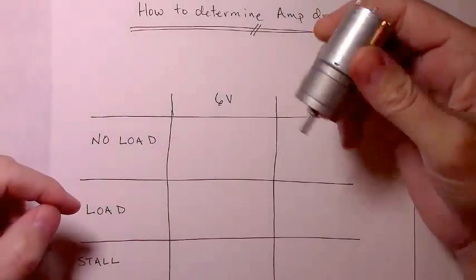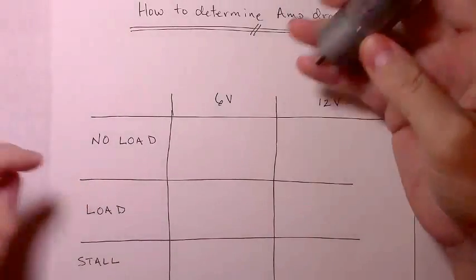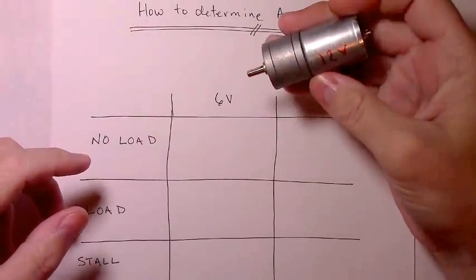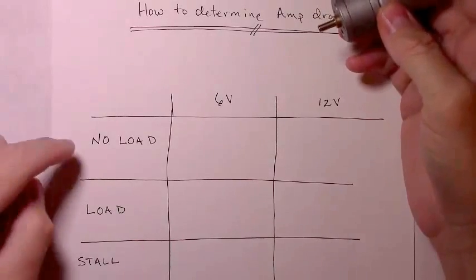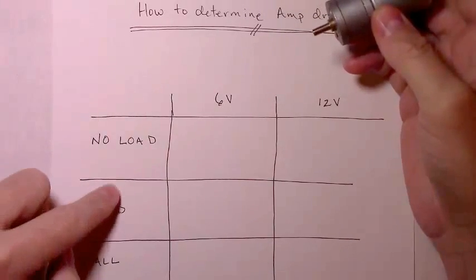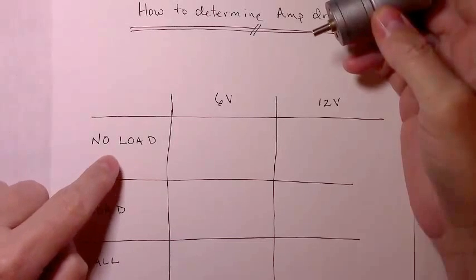Often times when you look at the data sheets, if you can find one for some of these motors, sometimes the data sheet doesn't exist, you just get some number associated with the amp draw. Normally they're giving you the no load number, which is the lowest number you're ever going to see.